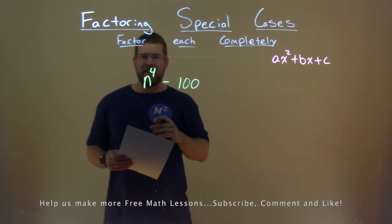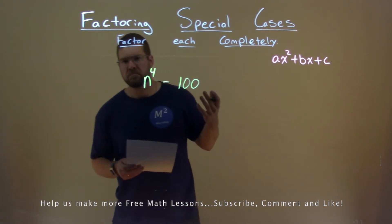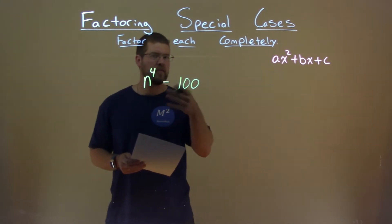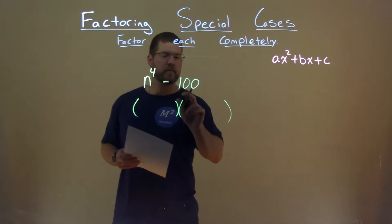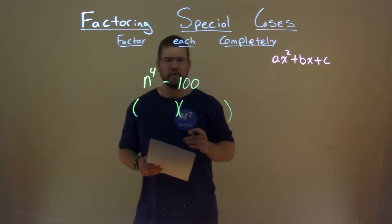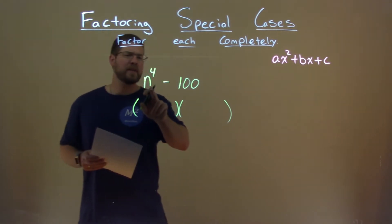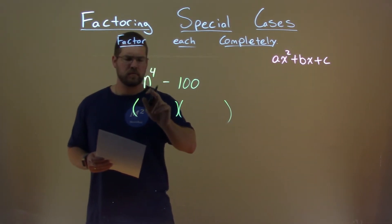Notice here the a value in front of n is 1. Keep that in mind, but square root of 1 is 1, so that doesn't really affect anything here. The square root of 100 is 10. 100 is also a perfect square. So the square root of n to the fourth power, well, that's n squared.